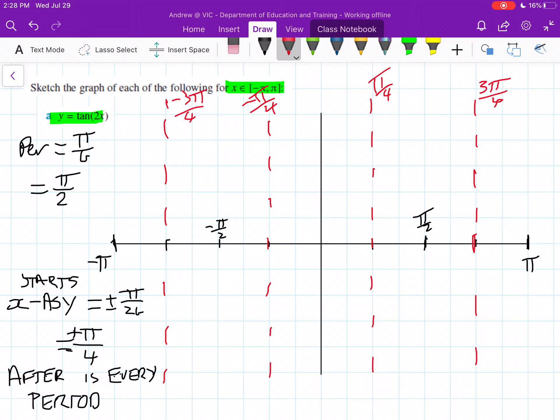Alright, so tan graphs actually sort of go up and down, and they keep working in the same cycle. We'll start off the one in the middle here, and I'll do this in green. So it goes through (0,0) here, and we start off down the bottom here. Remember asymptotes - there's a point that it gets closer to but never touches.